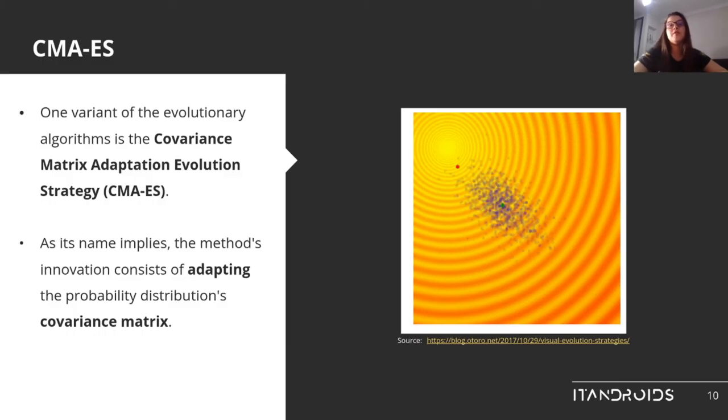One variant of the evolutionary algorithm is the Covariance Matrix Adaptation Evolution Strategy, or CMA-ES. As its name implies, the method's innovation consists of adapting the probability distribution's covariance matrix. This approach is illustrated in this animation. You can see that it has those spread and shrink effects that we want in order to reach better solutions.